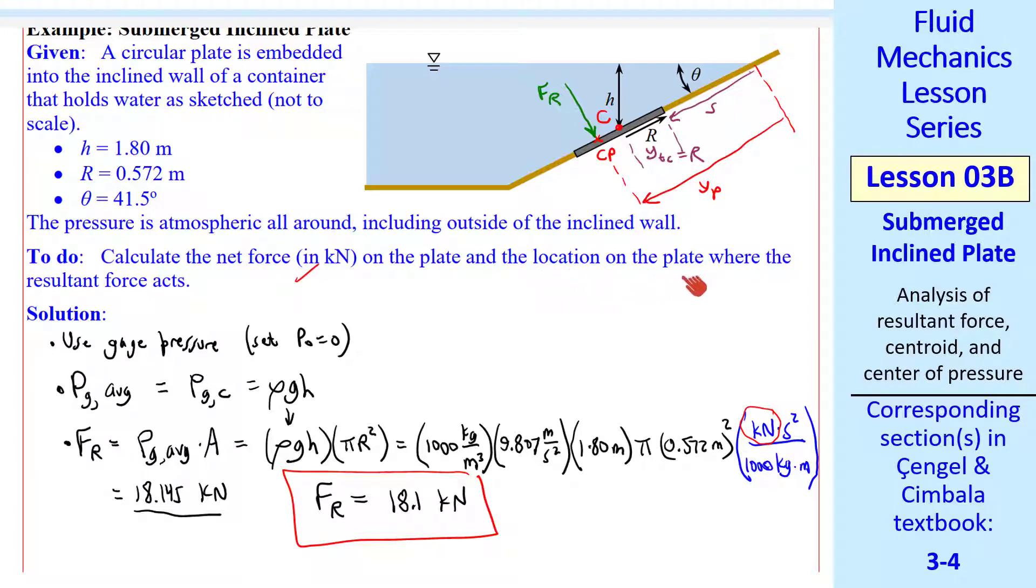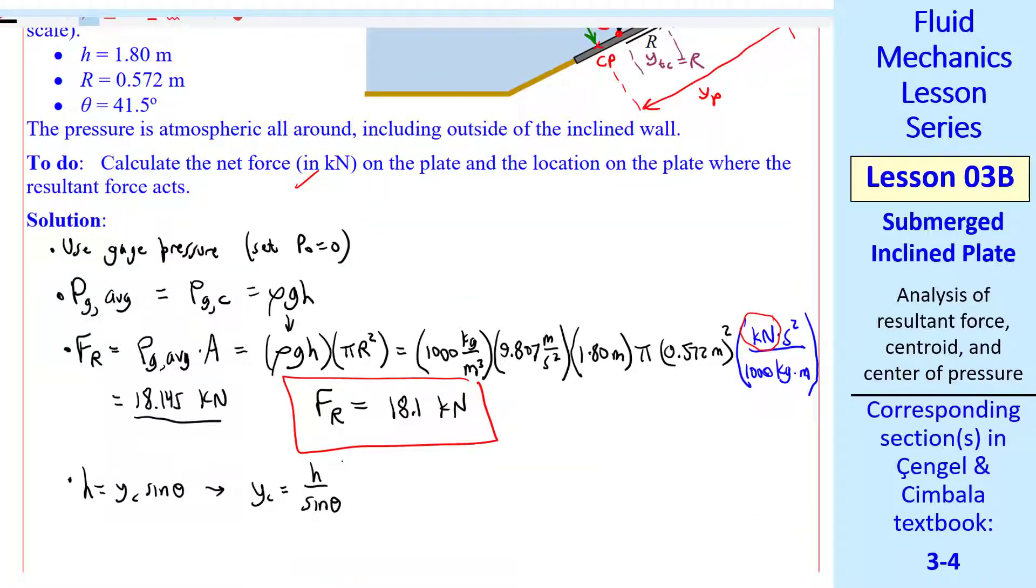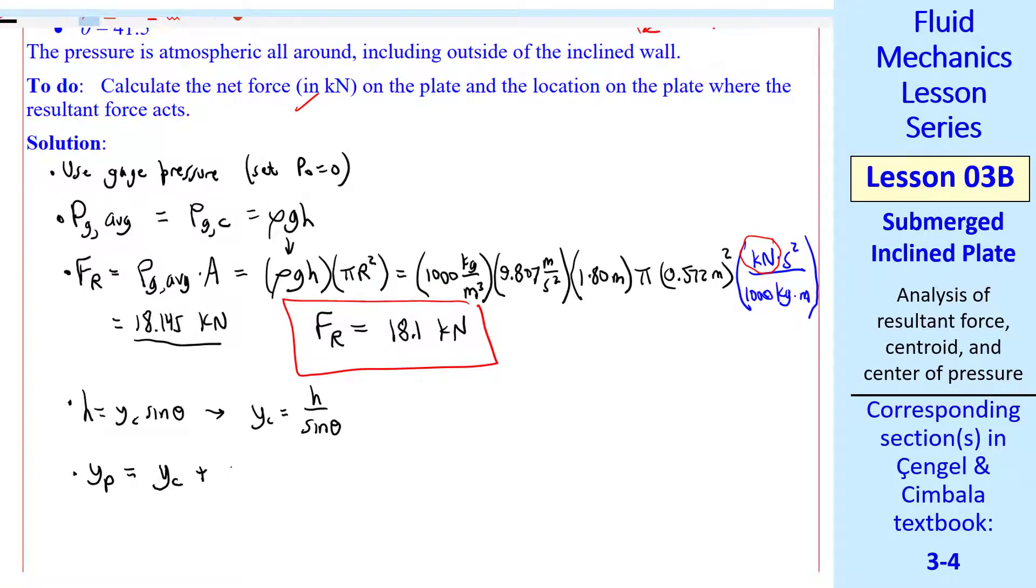Now we want to calculate where that force acts. Well, this distance is YC and H equal YC sine theta. So YC is H over sine theta. And YP, from our above equation, is YC plus IXXC over YCA. We plug in YC and we look up IXXC for a circle, which is pi R to the fourth over four, from our table for a circle, and YC in the denominator.